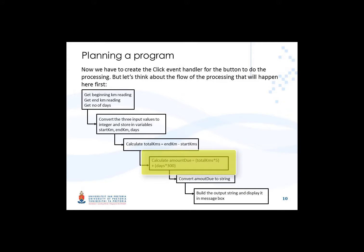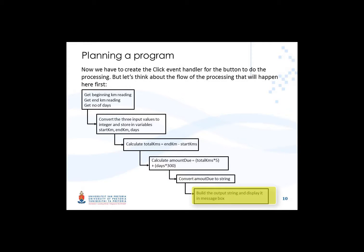The amount due consists of two parts: the total kilometers times 5 Rand, plus the total number of days times 300 Rand. When we've calculated that sum we can convert the result to a string again and then display that in a message box.